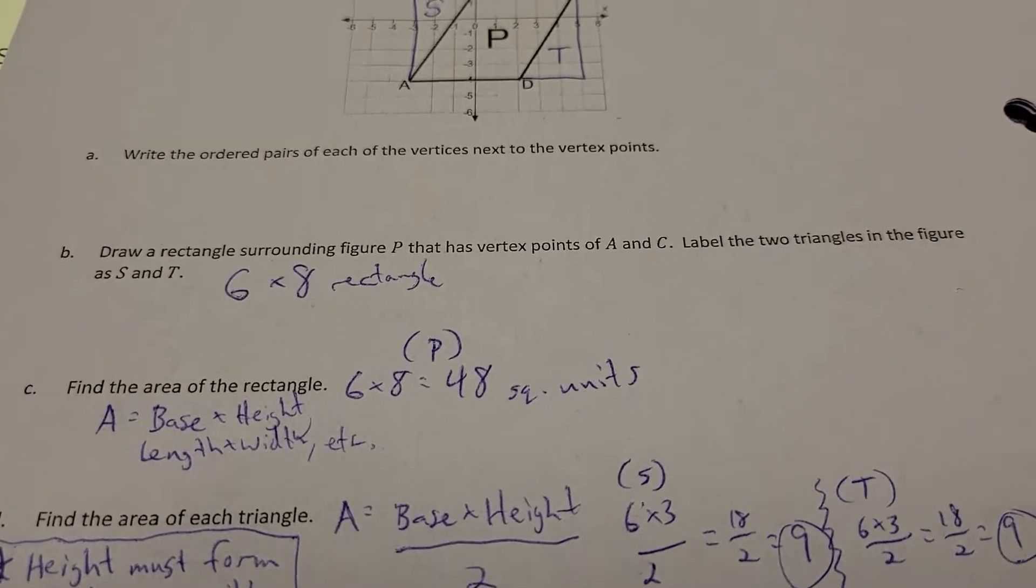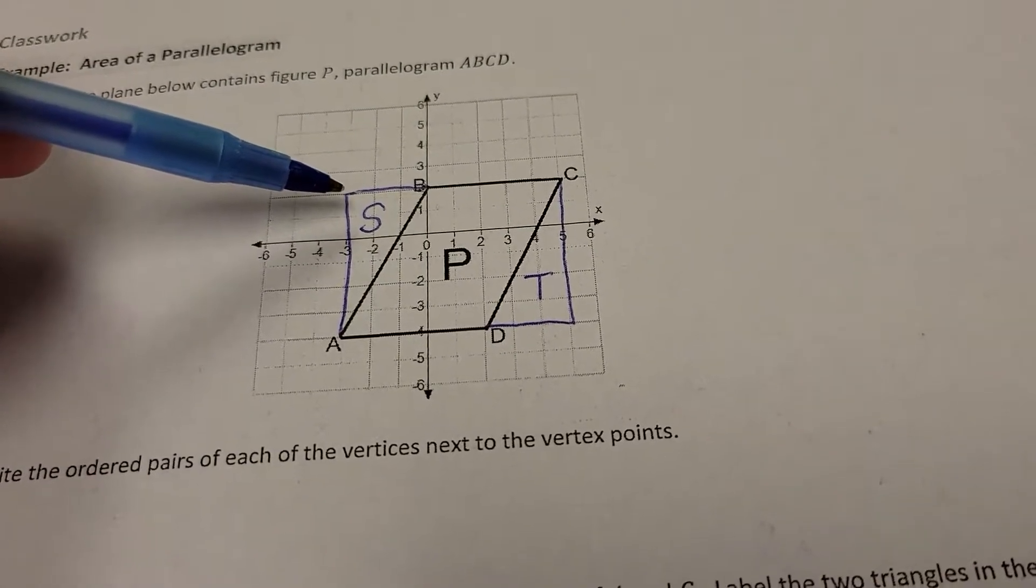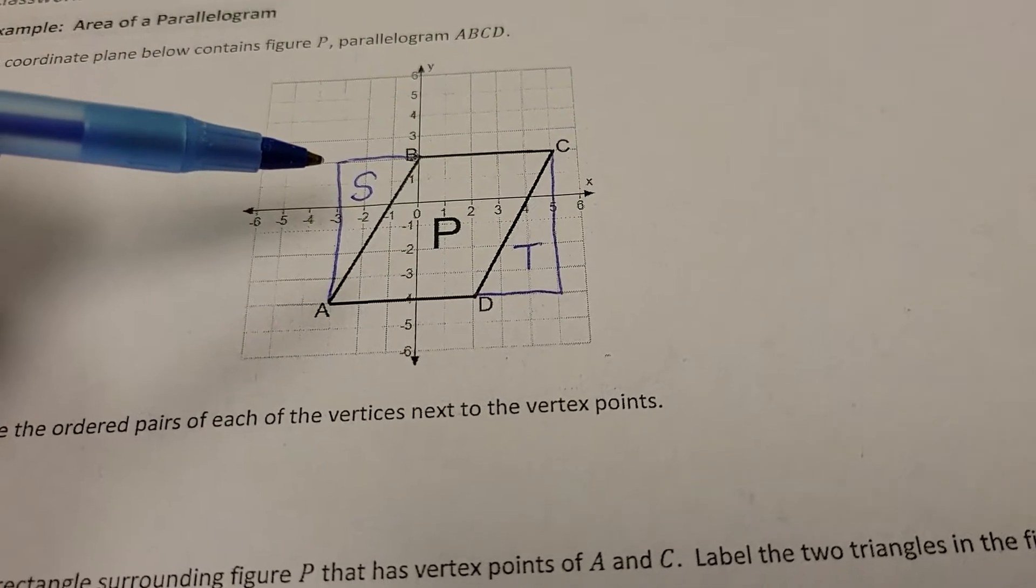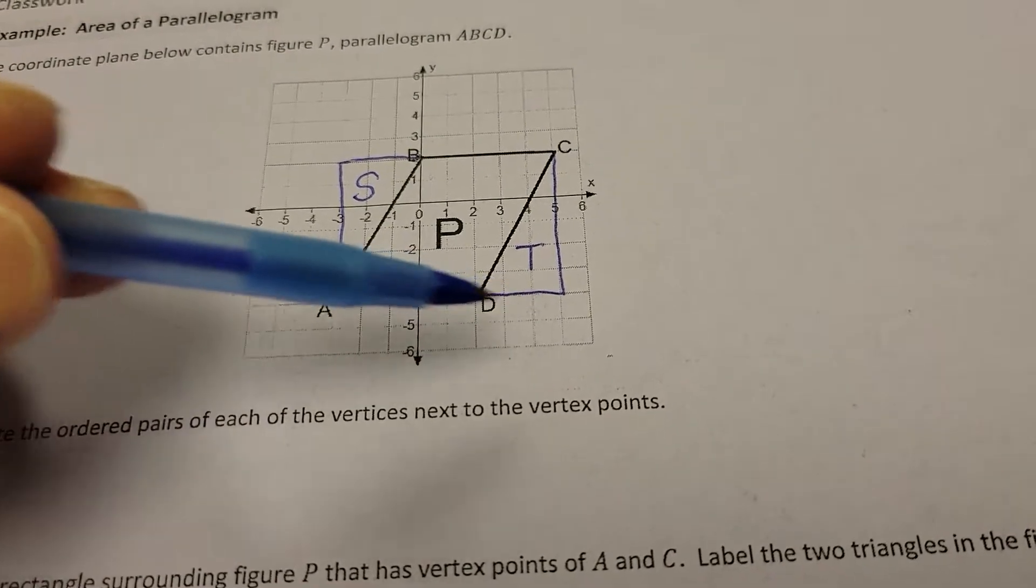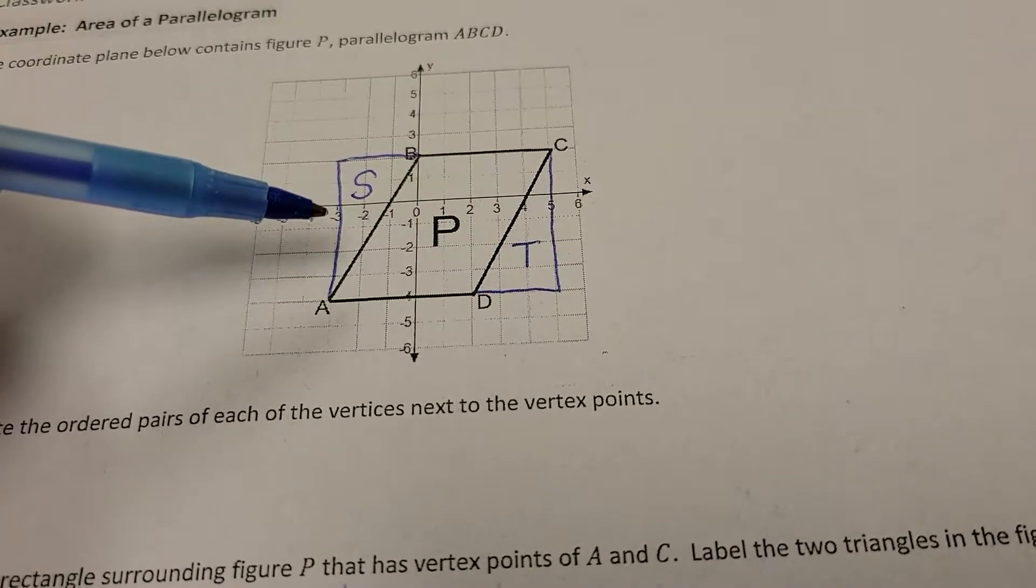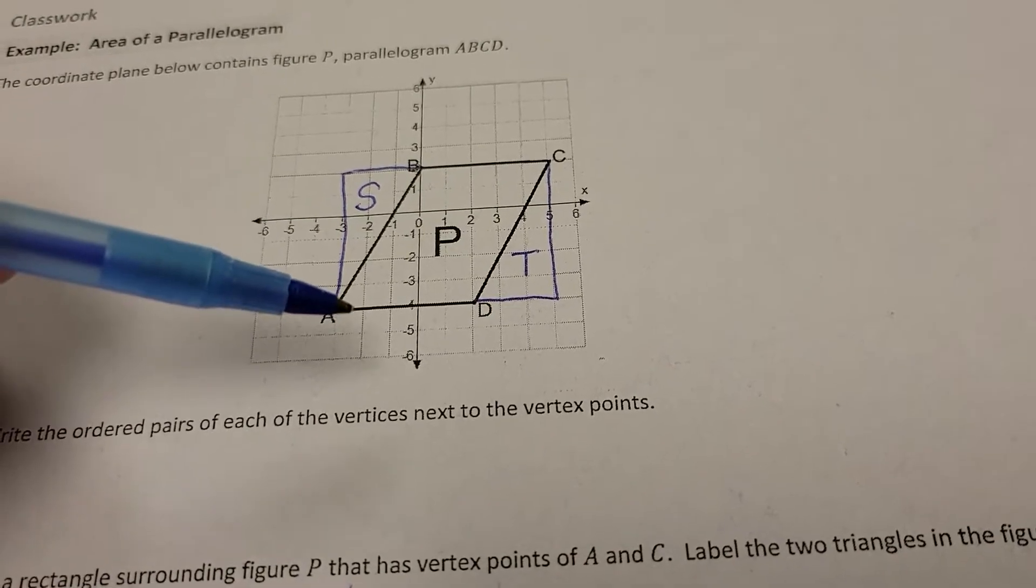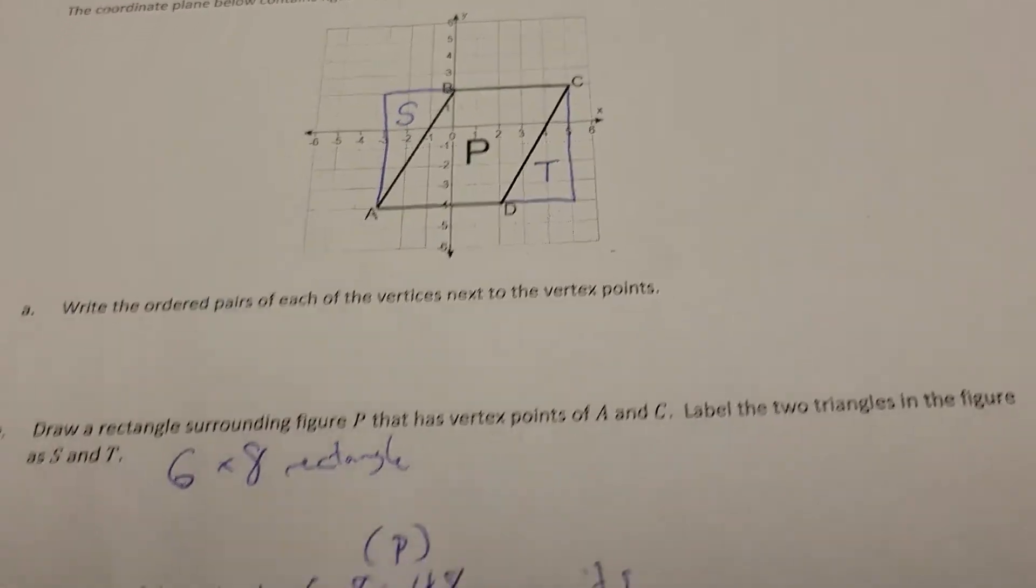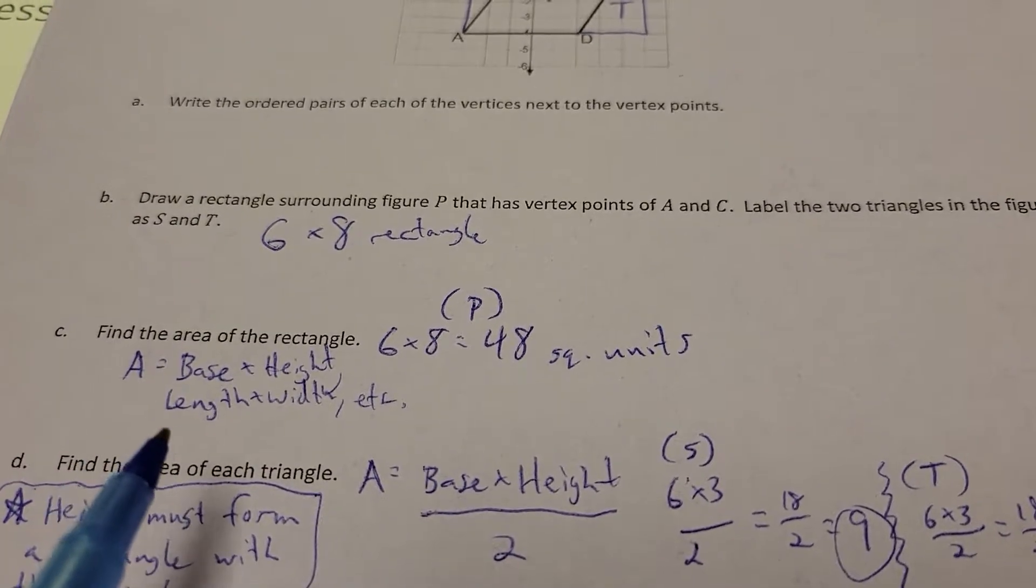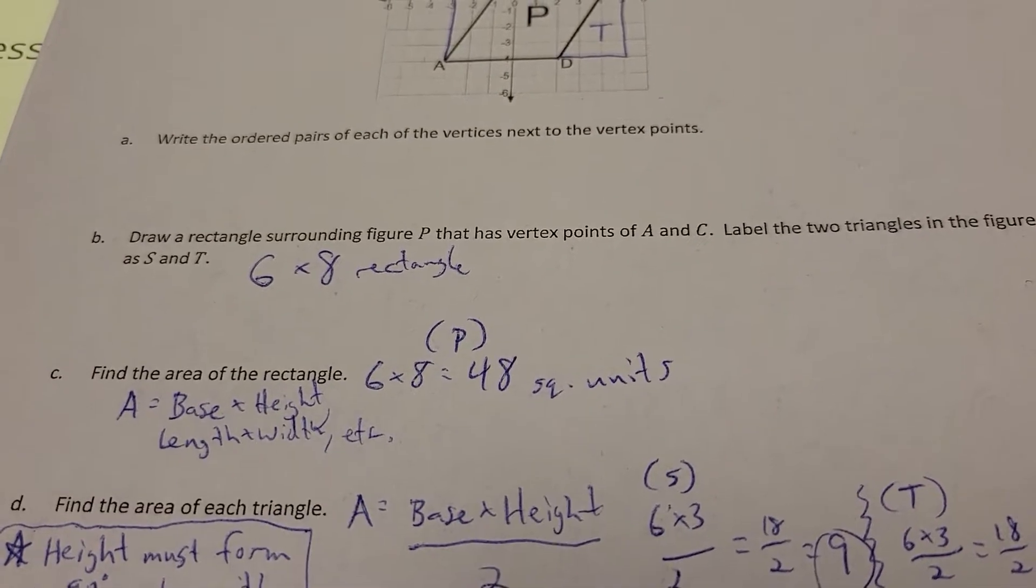Now find the area of the rectangle. Well, if you count across on your grid, you have 3 and 5 make 8 from left to right. Maybe you consider it the base, I guess. And then you have 4 and 2 more give you 6 for the height. So you could call it length times width, base times height, doesn't really matter, the same thing. So really, it becomes a 6 by 8 rectangle. So the area of that, 6 times 8, base times height, length times width, is 48 square units.